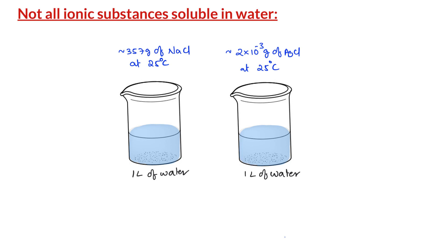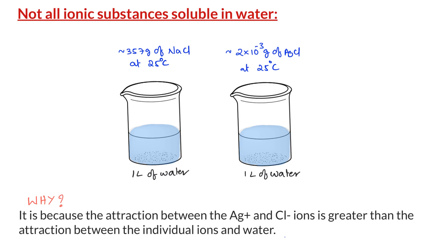Now, why is sodium chloride more soluble than silver chloride? It is because the attraction between the Ag+ and Cl- ions is greater than the attraction between the individual ions, i.e. Ag+ and Cl-, with the water molecules.